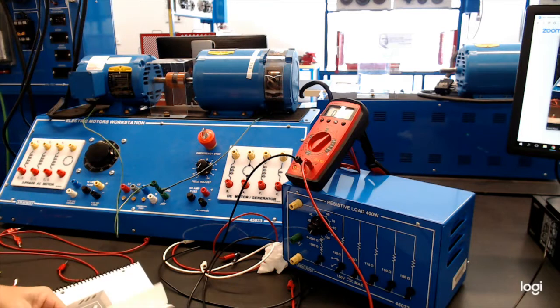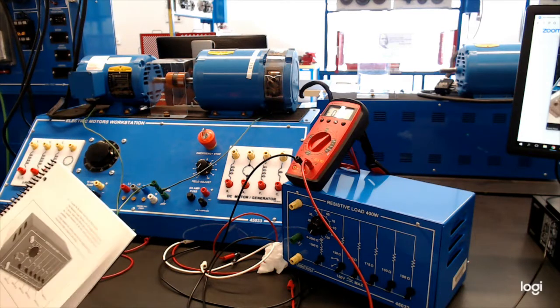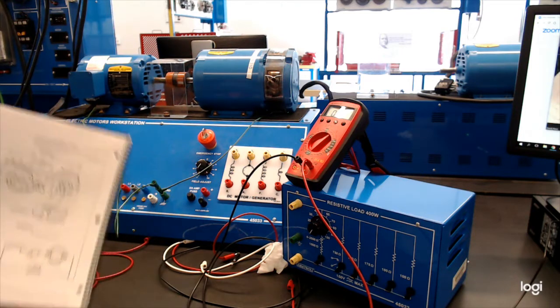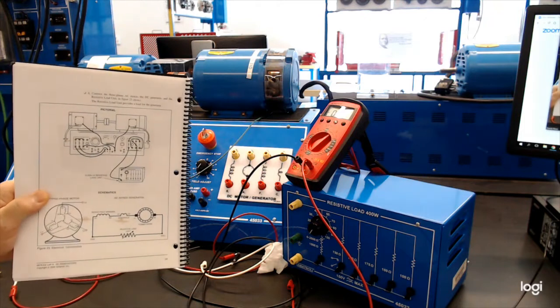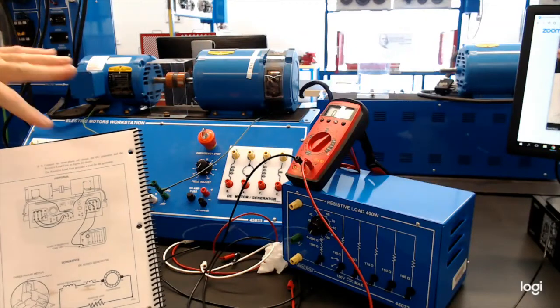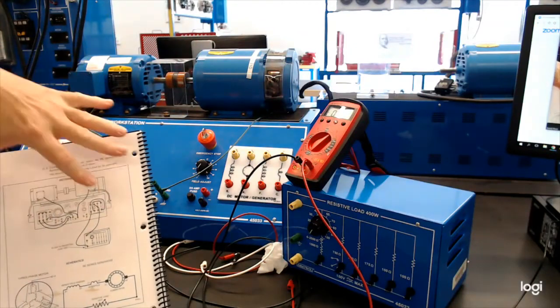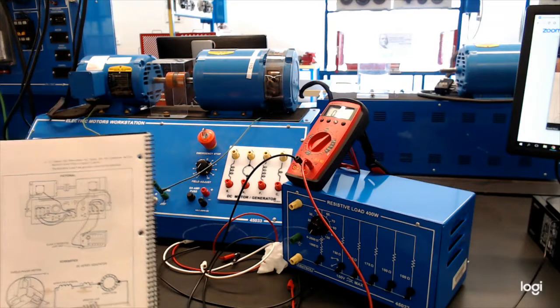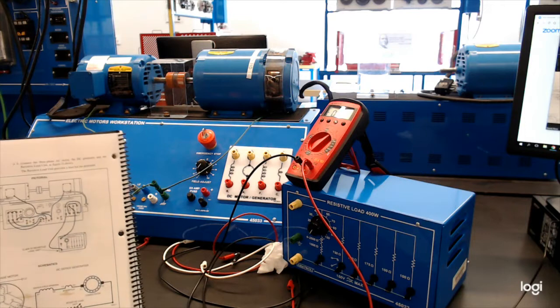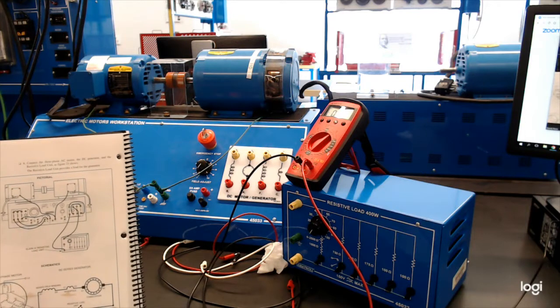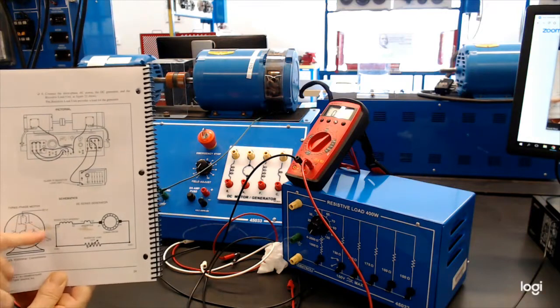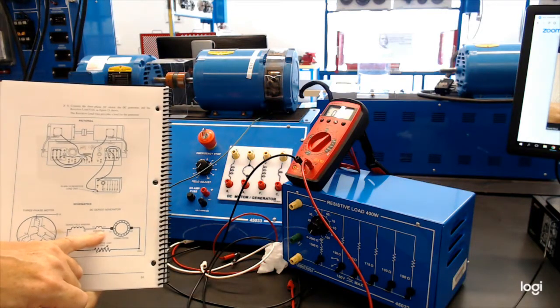Now, moving on, he's telling us to do the connection. Now, originally, initially, you may sort of lean on the pictorials, and that's fine. I understand that, it sort of gives you a layout of how to set this up. But what I want you to be doing, ultimately, is going by these wiring schematics. And you've got two different ones. You've got one for the three-phase motor here, and then you've got one for the DC series generator here.